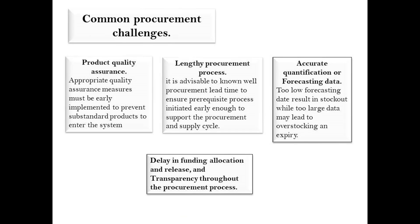Common Procurement Challenges: Product Quality Assurance — appropriate quality assurance measures must be implemented early to prevent substandard products from entering the system. Lengthy Procurement Process — it is advisable to know procurement lead times well to ensure prerequisite processes are initiated early enough to support the procurement and supply cycle. Accurate Quantification — too low forecasting data results in stock-outs, while too large data may lead to overstocking and expiry.